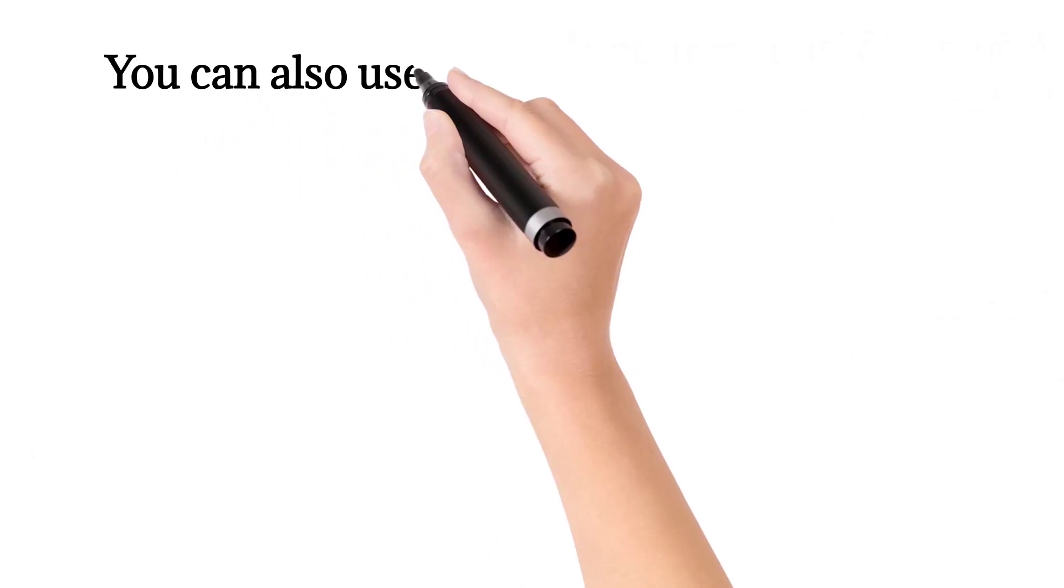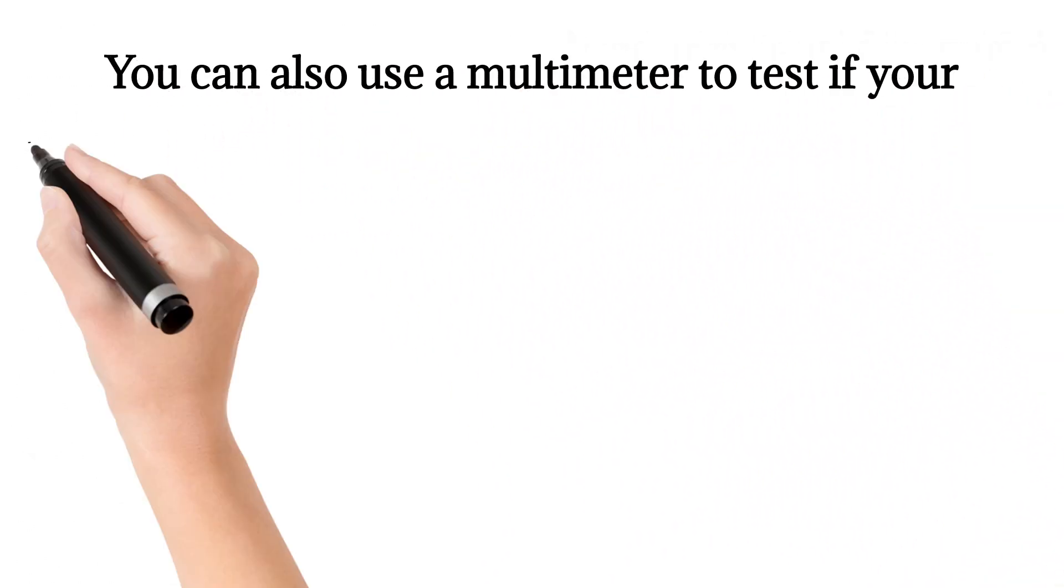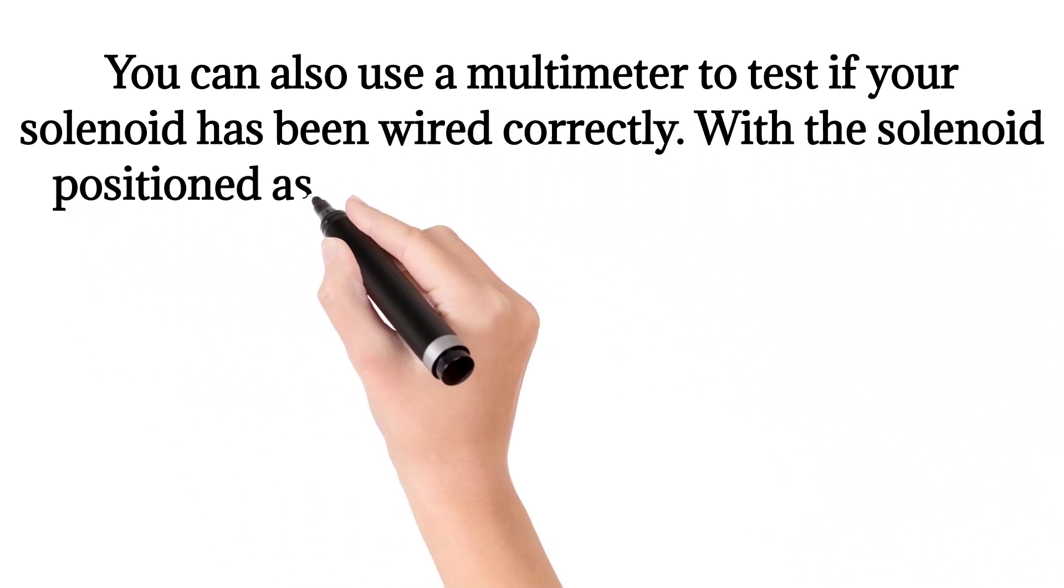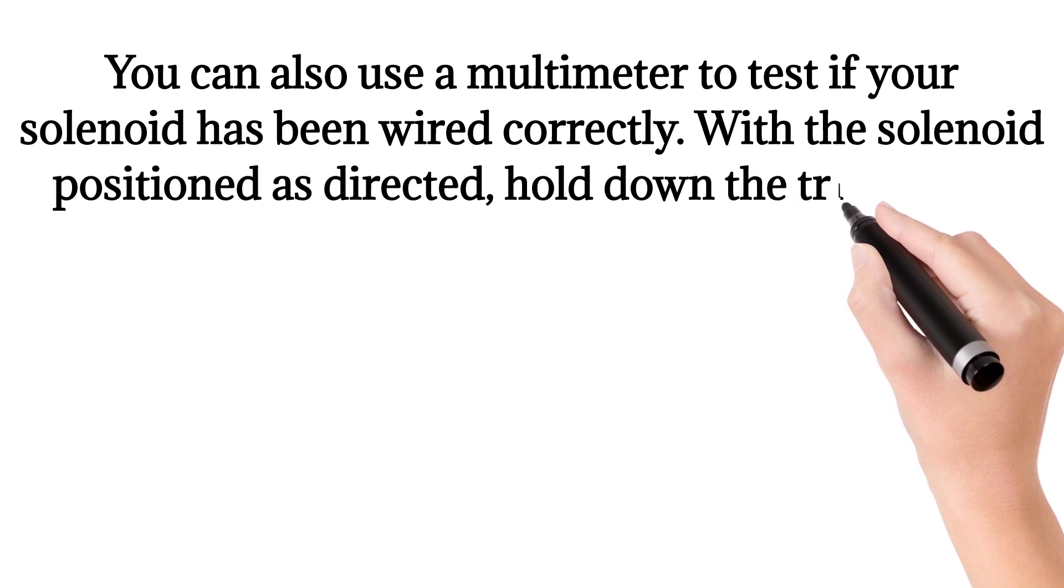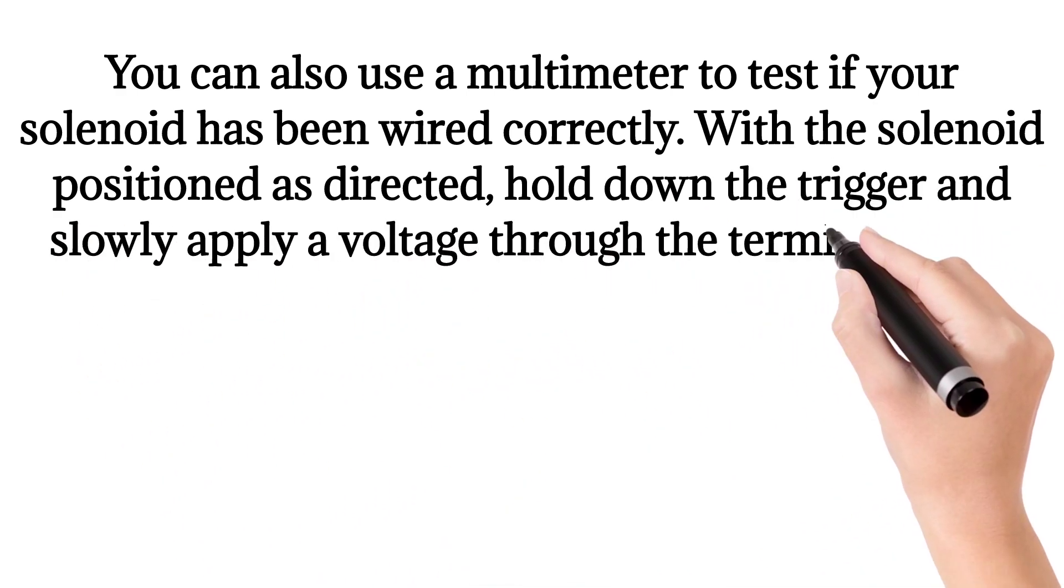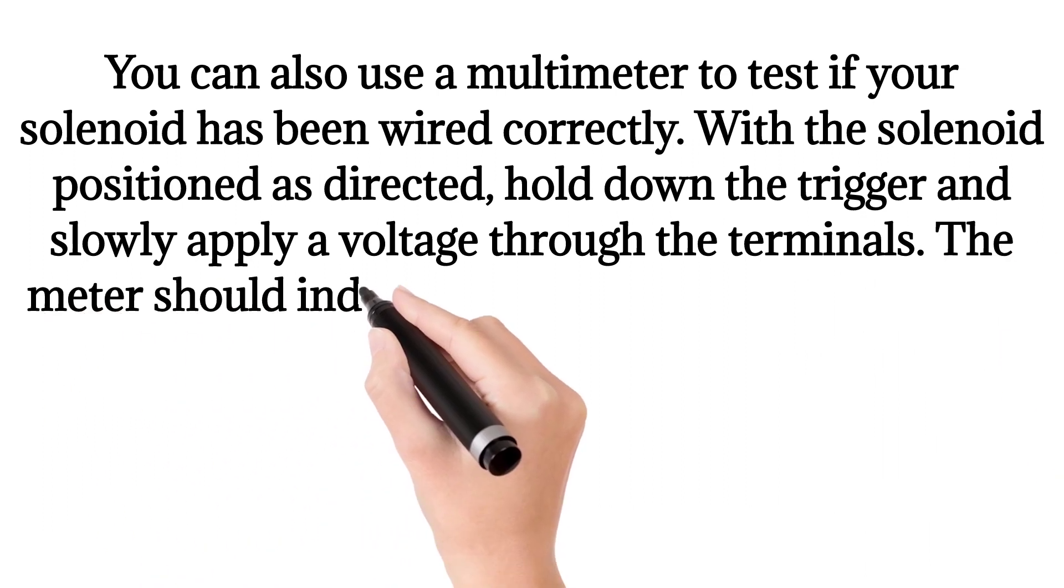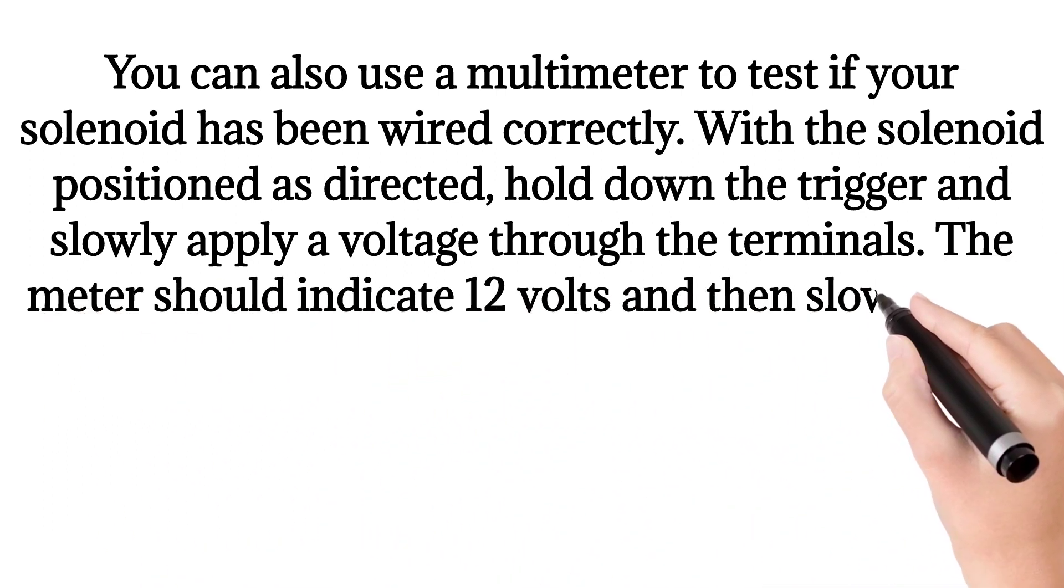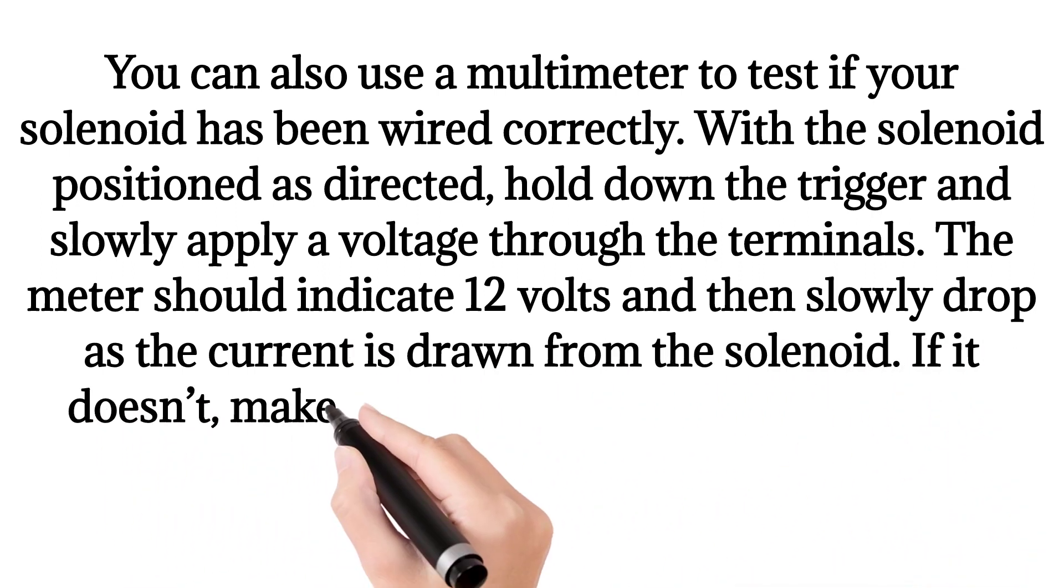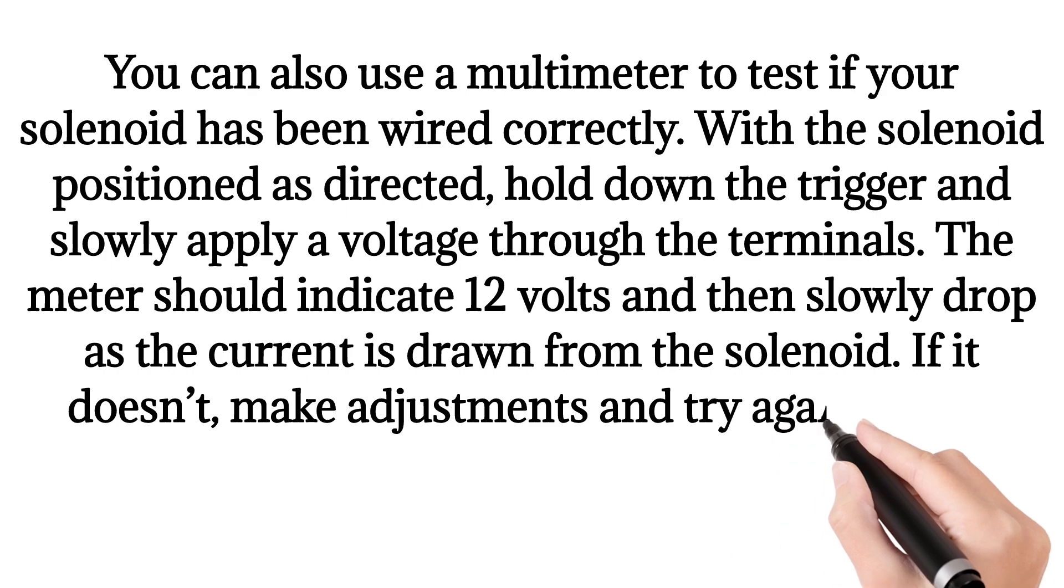You can also use a multimeter to test if your solenoid has been wired correctly. With the solenoid positioned as directed, hold down the trigger and slowly apply a voltage through the terminals. The meter should indicate 12 volts and then slowly drop as the current is drawn from the solenoid. If it doesn't, make adjustments and try again until it does.